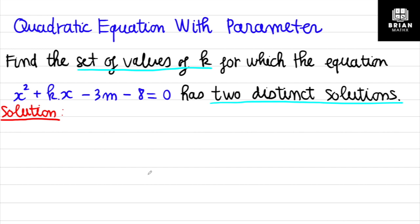I'm giving you this video for practicing more. As you see in the slide, the question asks you to find the set of values of k for which the equation x² + kx − 3k − 8 = 0 has two distinct solutions. Two distinct solutions means the discriminant has to be positive, or greater than zero.